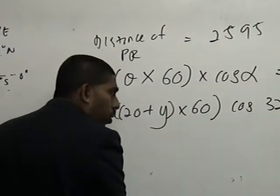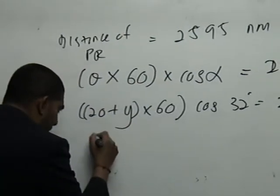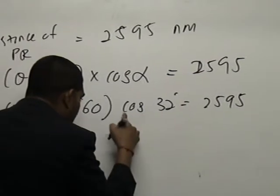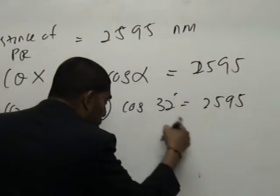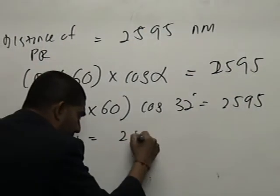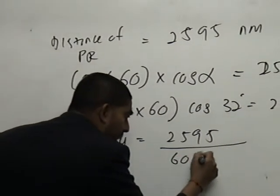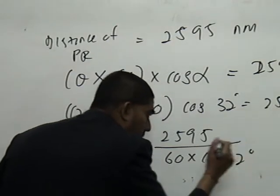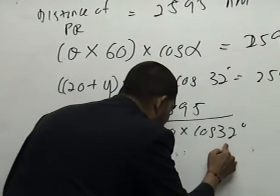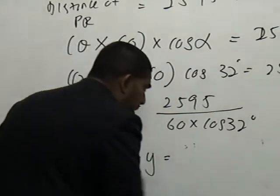So, very quickly, what I do is that... I must do this. Okay. So, what I do now, very easy, I move the rest. 20 plus Y, I leave it here. This times 60, bring there, become divide. This times cos 32, so I bring there, become divide. So, I will get 2, 5, 9, 5 over 60 times by cos of 32 degrees. Now, quickly, you have to press your calculator and find how much is cos 32 degrees.